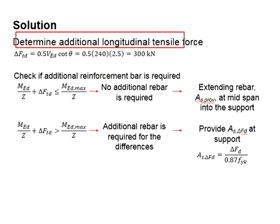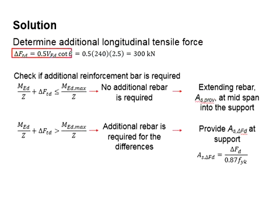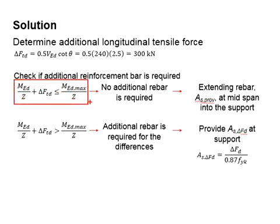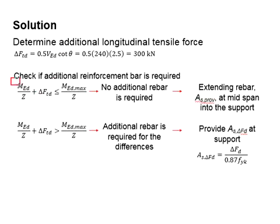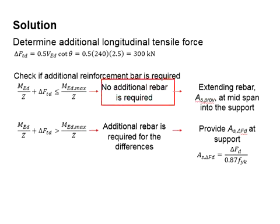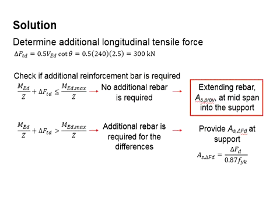Next, you need to calculate the additional longitudinal tensile force caused by the shear. Using the relevant equations, you will get the additional tensile force of 300 kilonewton. You need to check if additional reinforcement bar is required. For a simply supported beam, you can assume the moment term equals zero. When you find the result is less than Med/z, that means you do not require additional reinforcement bar — the existing reinforcement from the mid-span to the support is sufficient.